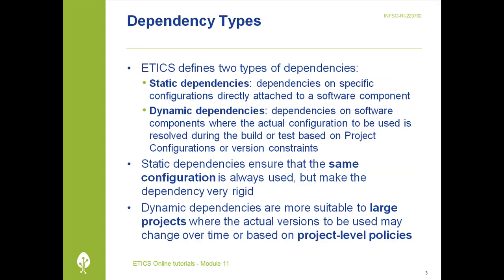Ethics defines two types of dependencies. Static dependencies are dependencies on specific configurations directly attached to a software component. Dynamic dependencies are dependencies on software components where the actual configuration to be used is resolved during the build or test based on project configurations or version constraints.